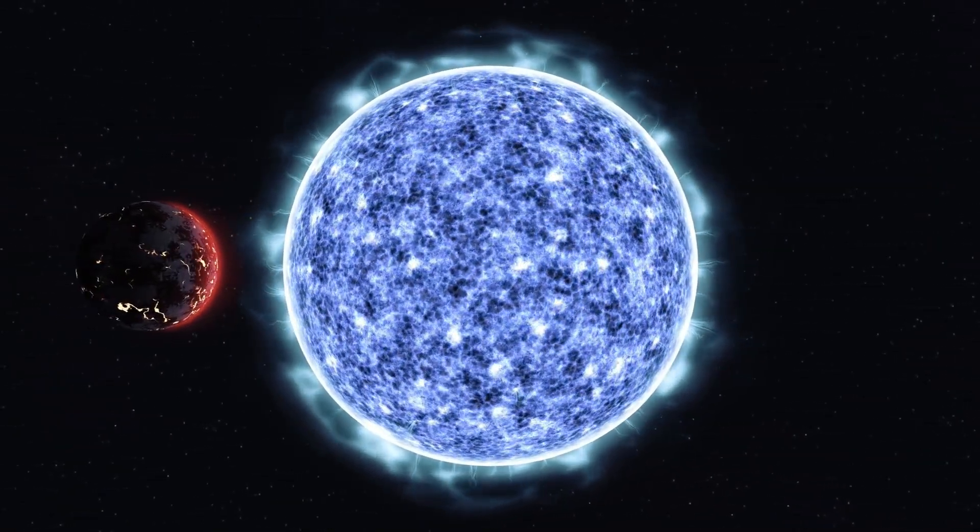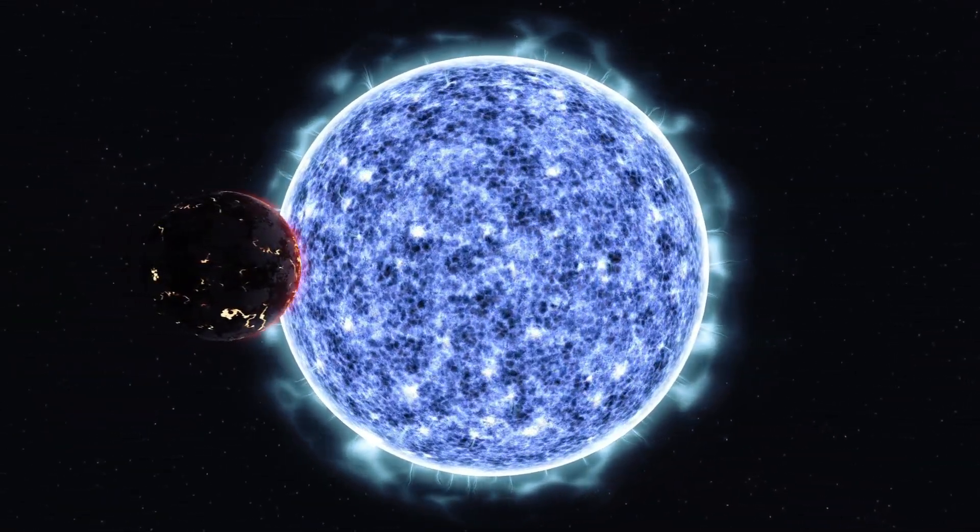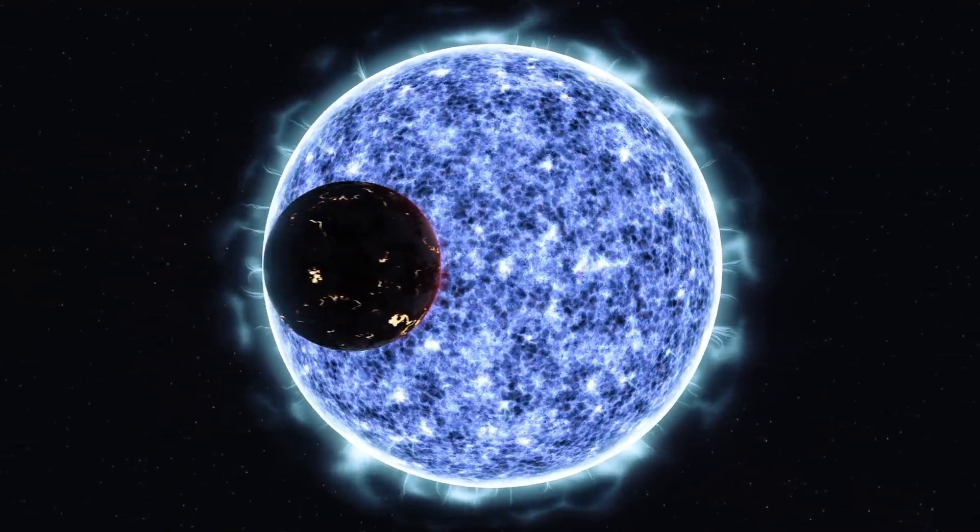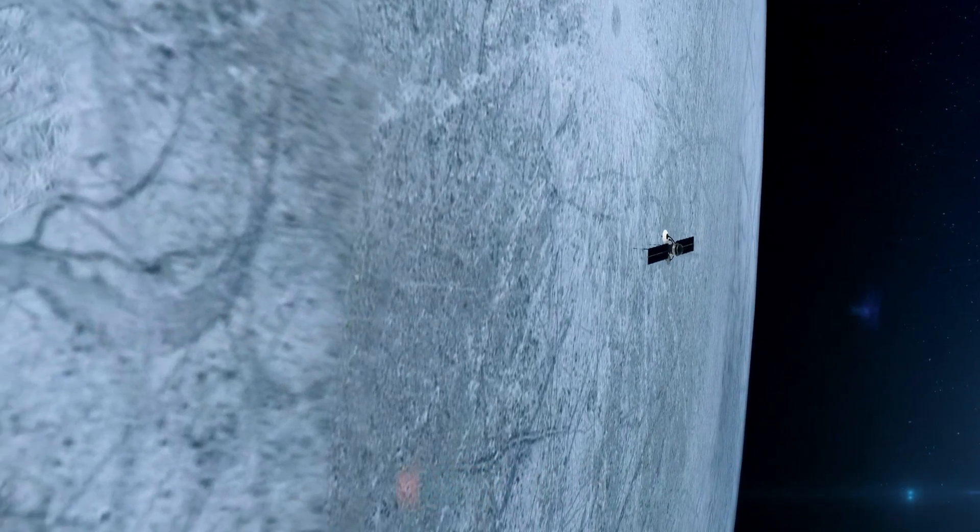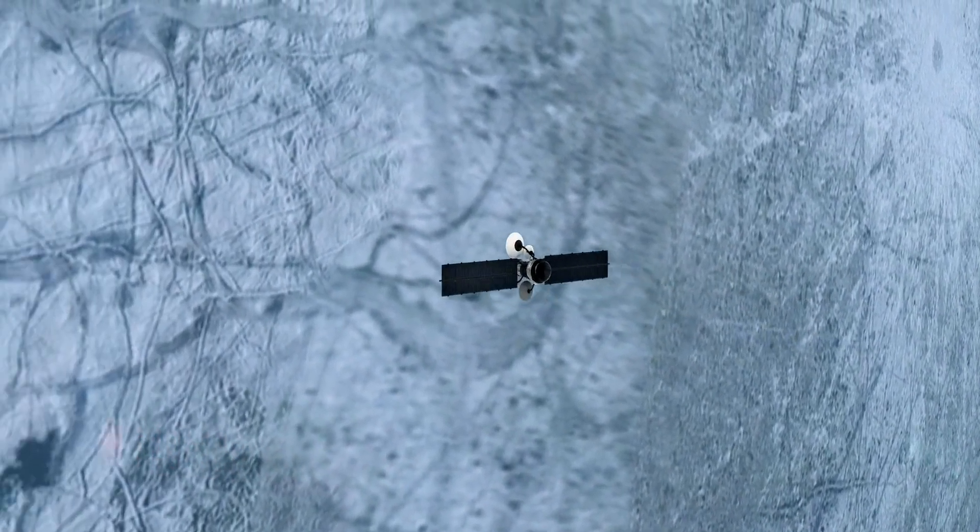Energy generated in the core moves toward the surface, helping to balance internal processes with the star's external brightness. As hot matter in the core rises and cooler matter descends, convection currents form that transport energy to the outer layers.